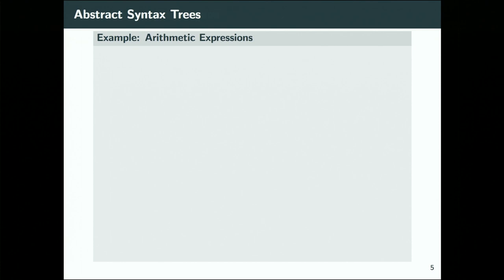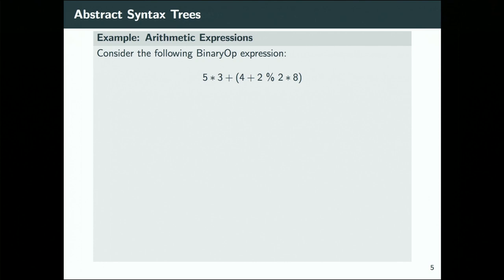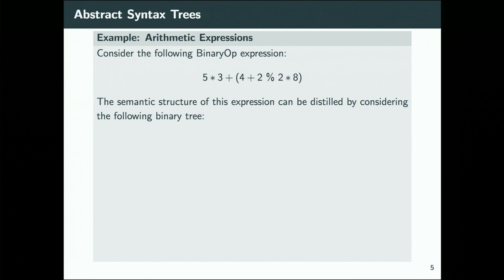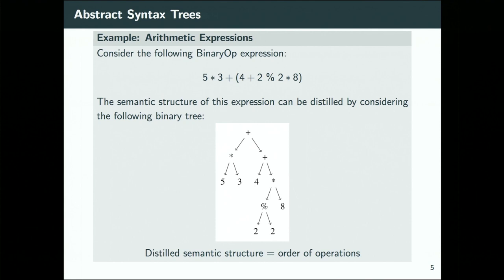A toy example of an abstract syntax tree from a mathematical point of view: let's say we have a binary operation expression — numbers combined with binary ops like multiplication, mod, or plus. The semantic structure of this expression can be distilled by considering it as a tree, where you read from leaves to root — bottom to top — combining numbers given the binary operation in a specific order. The semantics distilled by this expression is just the order of operations.